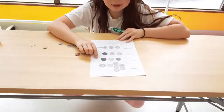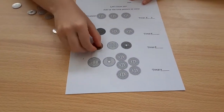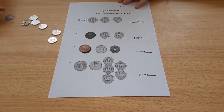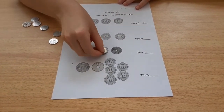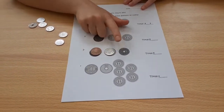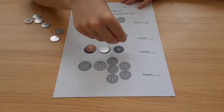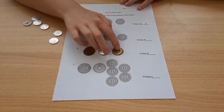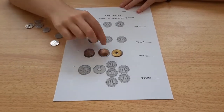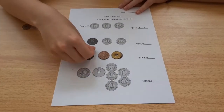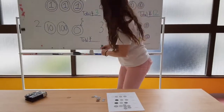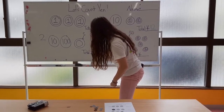Number two. I see 10, and do we remember what this coin is? This is the 100 yen coin — we have 100. So now I have 110. What coin is this here? That's the 5 yen coin. So I have 110 plus 5. I have 115 yen. So let's write that on the board — 115.